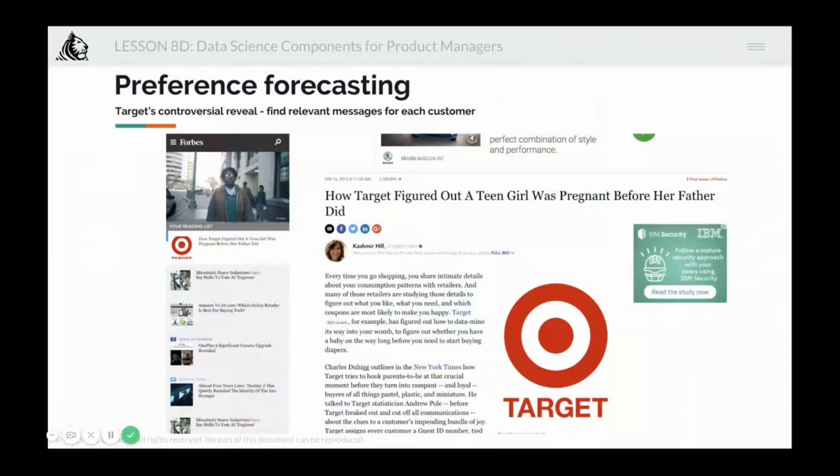There was a very interesting article on how Target was able to figure out a teen girl was pregnant before her father did. That was purely based on what kind of products the teen girl was ordering. It was a controversial reveal, and there's plenty of material written about this entire scenario. There's a good link in the speaker notes describing this in detail.